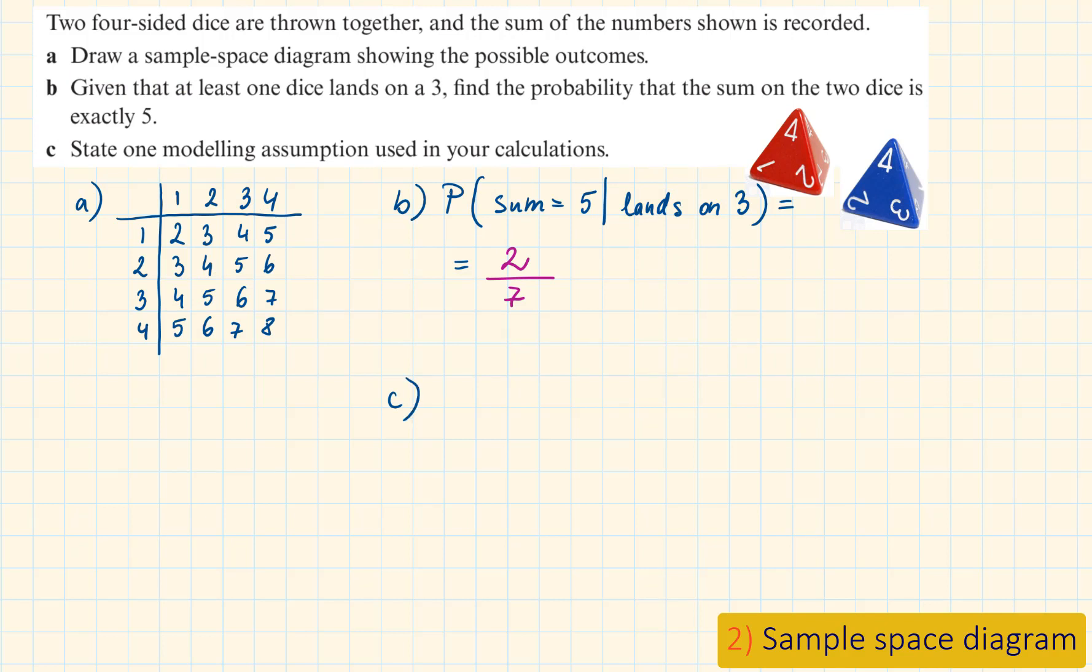Part C. State one modeling assumption used in your calculations. The assumption that we have used is that they are fair dice or they have equally likely outcomes. It means that each of the numbers are equally likely to happen.